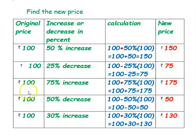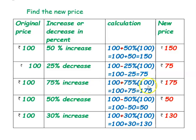The next example: original price is ₹100 and the increase is 75%. Since it is an increase, we add the increase in percent to the original price. So, 75% of 100 is 75. Therefore, 100 plus 75 equals ₹175. The new price is ₹175.